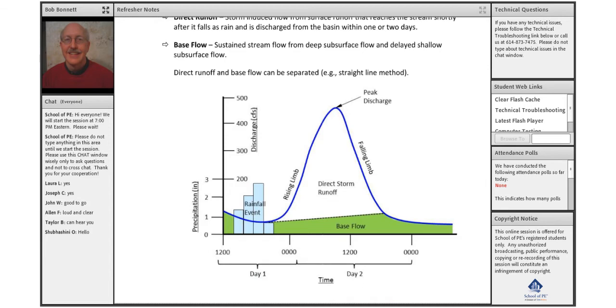So there's two pieces of data plotted there: the rainfall event and your flow rate in your stream.